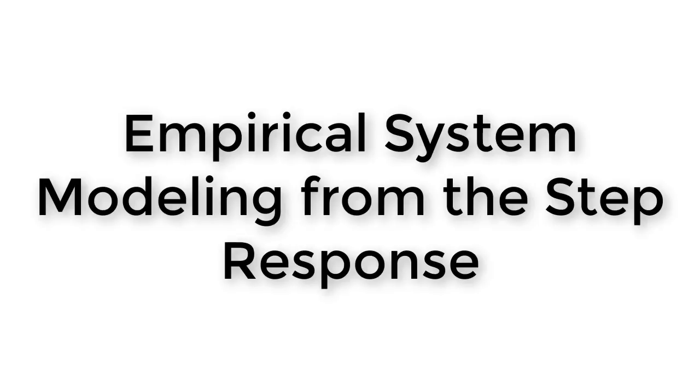In this video, we're going to start looking at empirical system modeling from the step response. In previous videos, we've looked at how to find control gains by guess and test. We set the control gains to some values, run the system, and watch the response. In some control situations, we can't use this approach because the consequences of picking bad control gains are too extreme. In these cases, we can use the approach of first creating a model of our system and then figuring out control gains by simulating the system. There are two basic approaches to creating a system model.